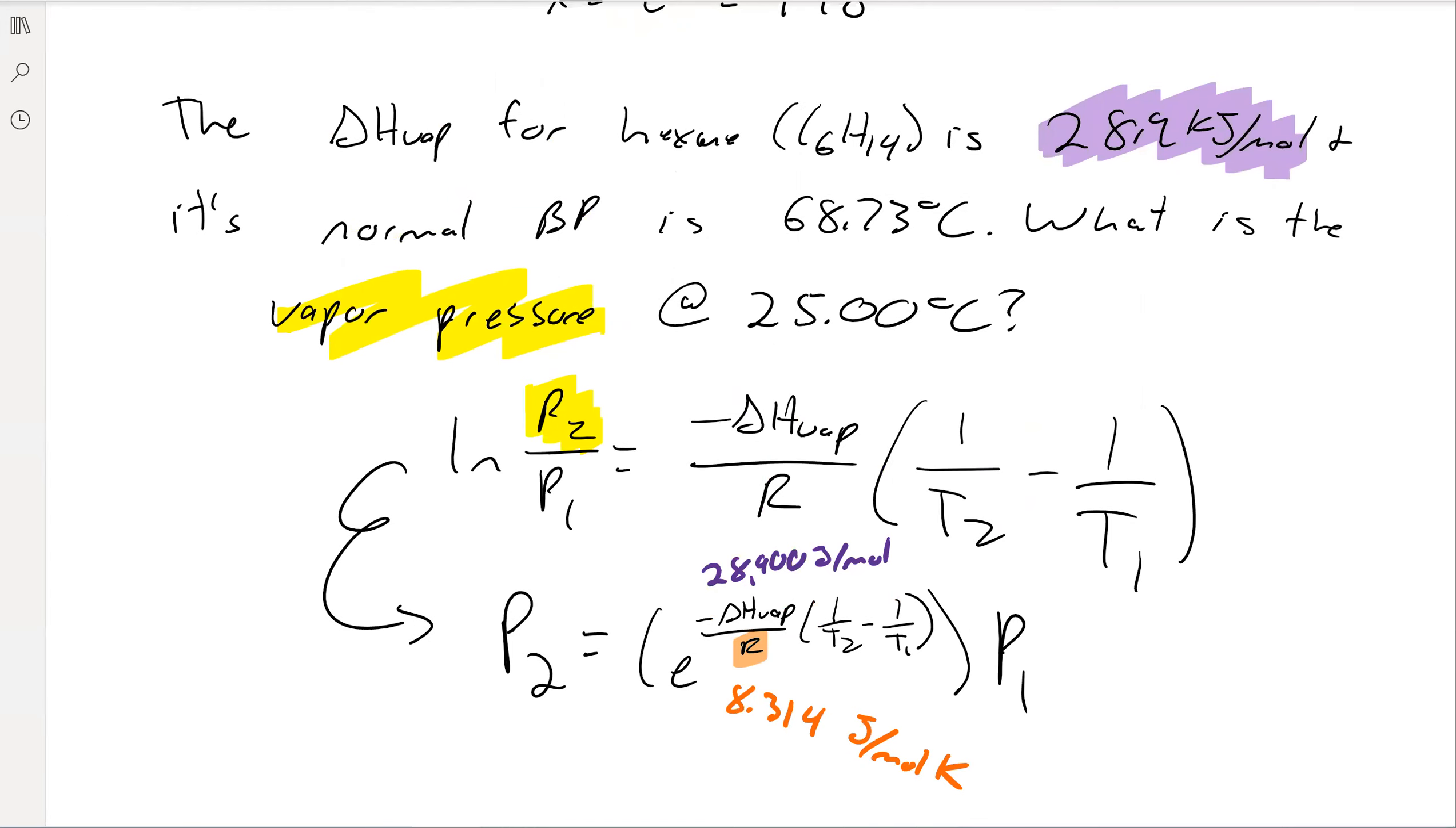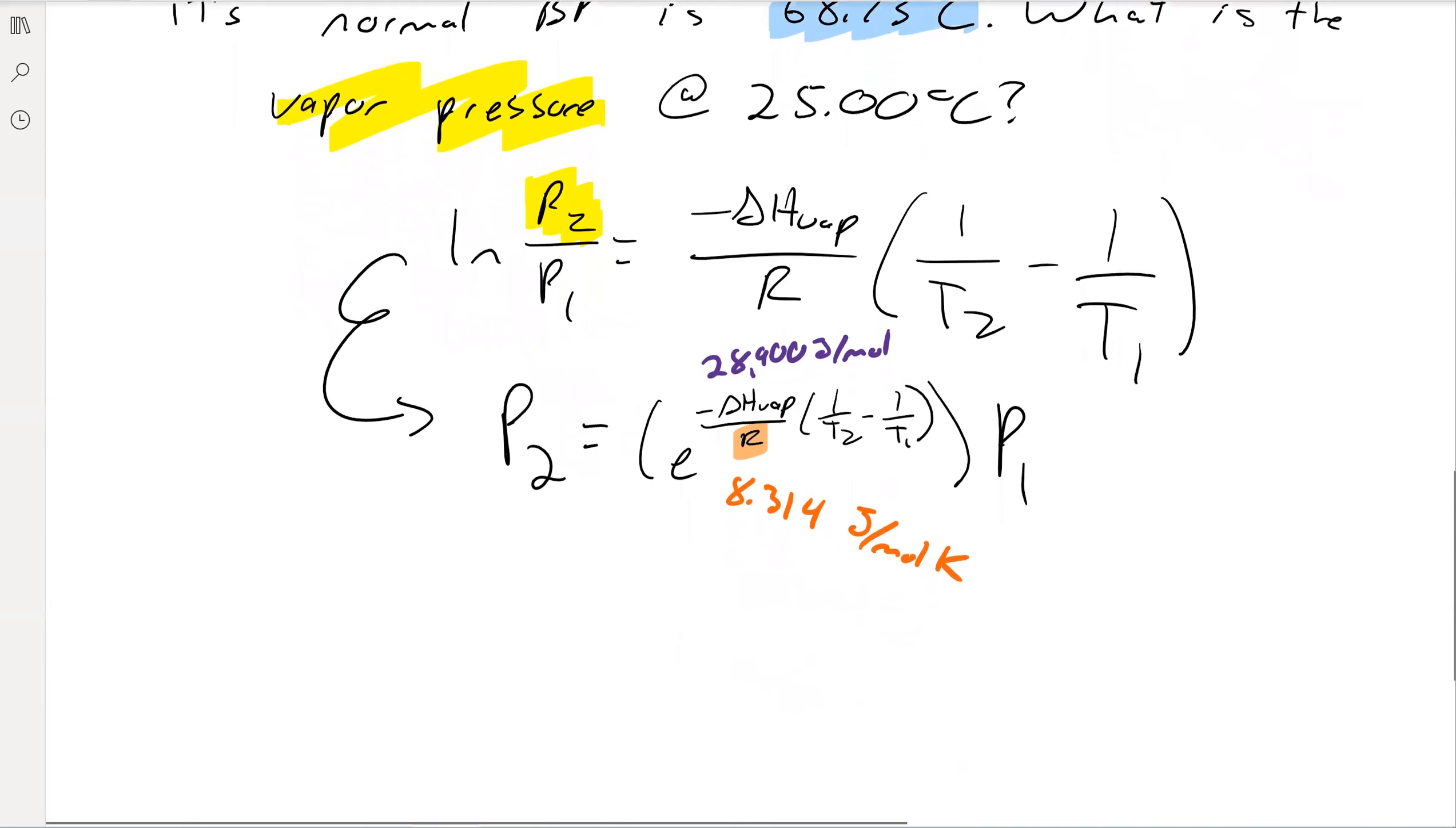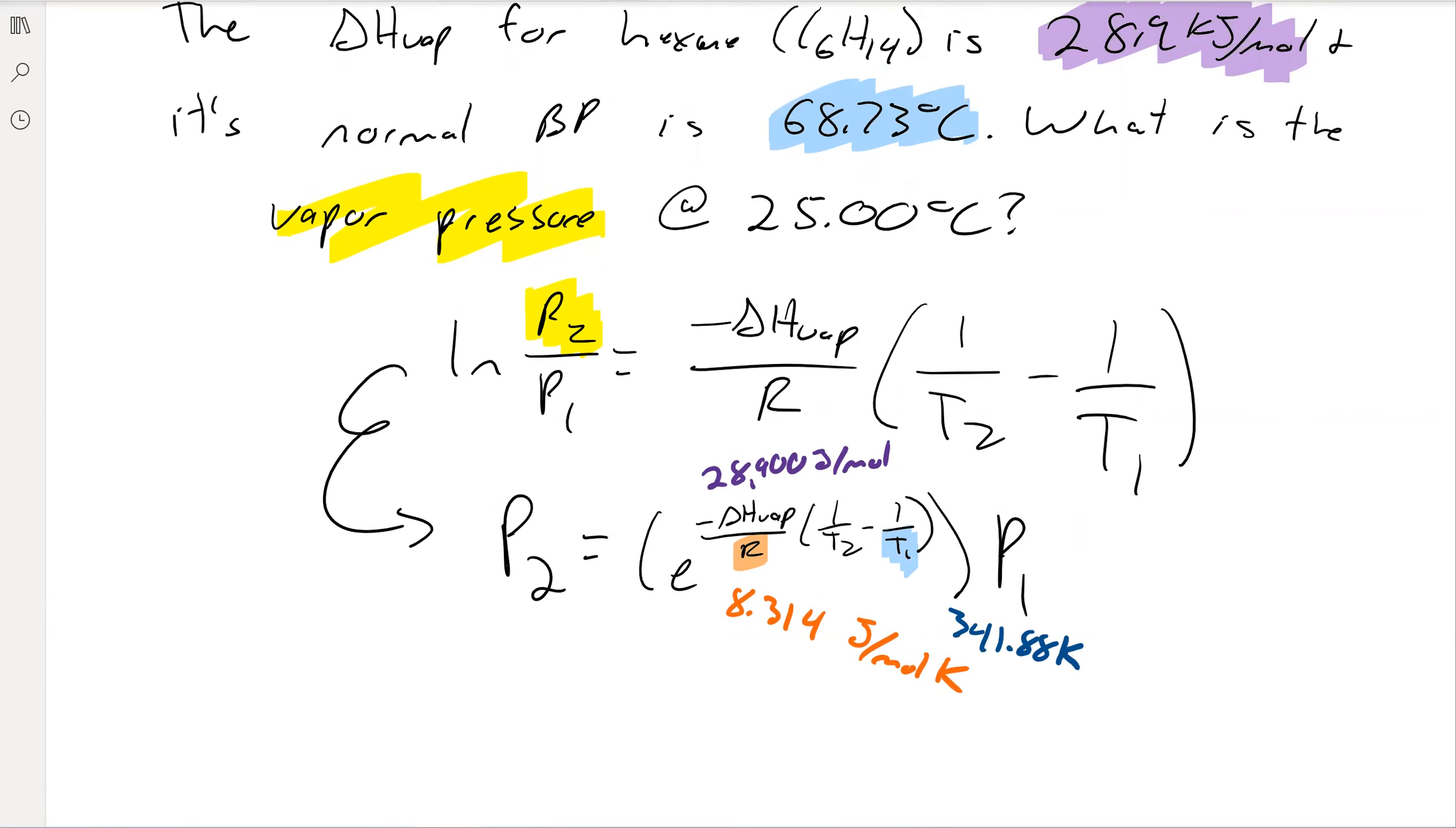For the boiling points, the normal boiling point is 68.73 degrees Celsius. That's the one not corresponding to our unknown variables. Since our unknown variable is P2, we'll plug that into T1. First, we're going to change it to Kelvin, so we'll add 273.15 to get about 341.88 Kelvin. The other boiling point is at 25 degrees Celsius, so we can turn that into 298.15 Kelvin.